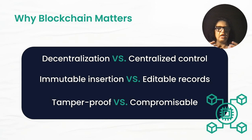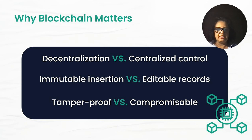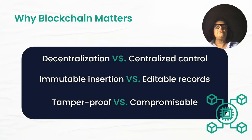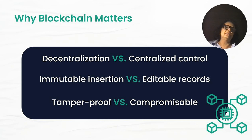Immutable means once you've inputted the data, you can't go and change it — versus an editable system where you can change the record. Think about Boeing, which is having issues with reliability and passing tests on their products. If all testing requirements were on a blockchain, you cannot move from one step to the next unless you've met all the requirements. In an editable world, you can fudge the records, but in the blockchain world, you cannot go and edit. That makes it very, very powerful — tamper-proof versus compromisable.